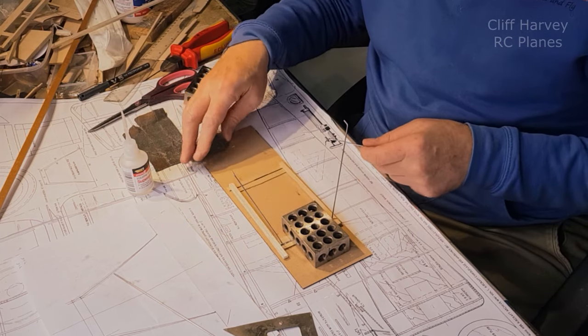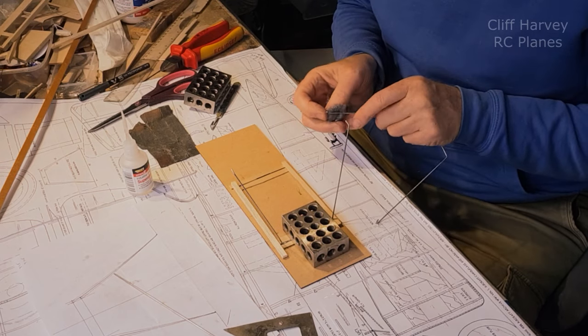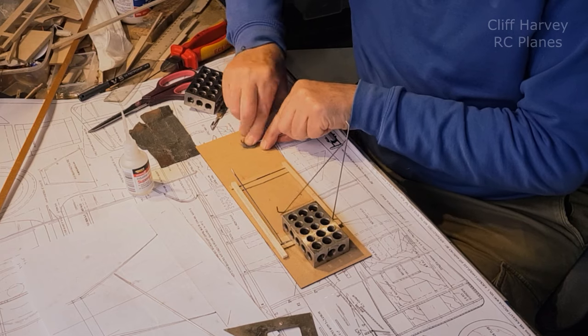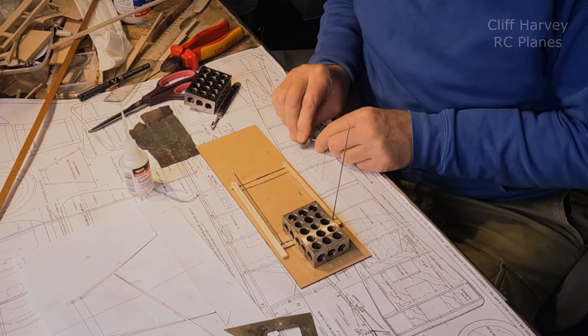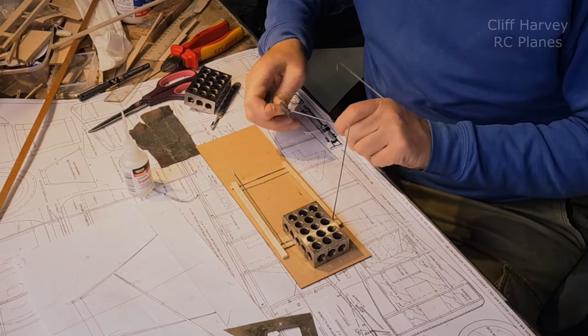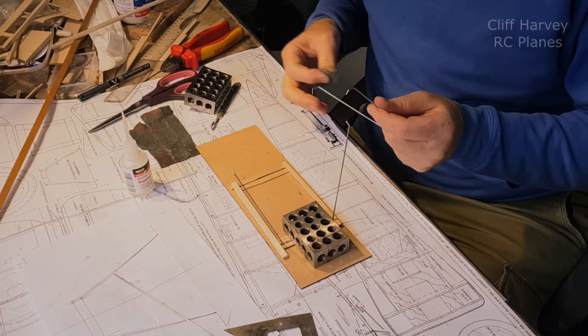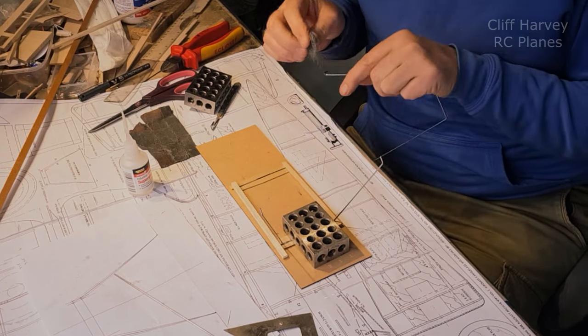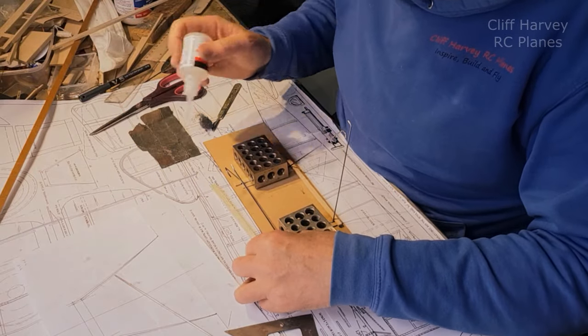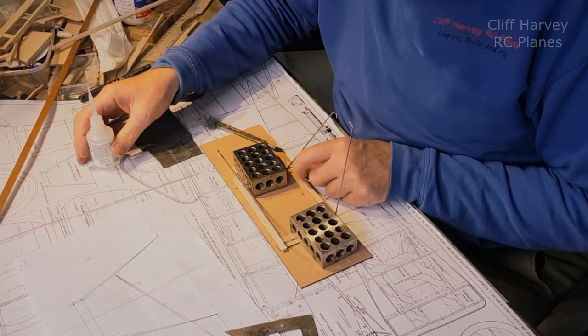That will just go on there and I'll hold that in place from a block, and the same this side. I'm going to stop them from going sideways just by CA'ing a little bit of balsa to each side. But before I commit to finally putting them in place, I need to give them one last clean. File it, sand it, anything you want, just clean it up and then don't touch it again because your fingers will be oily.